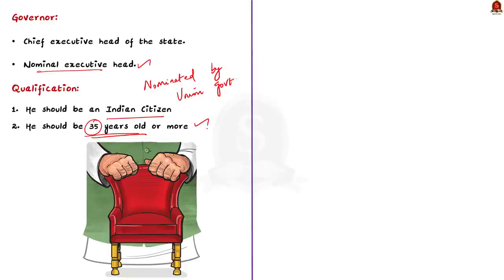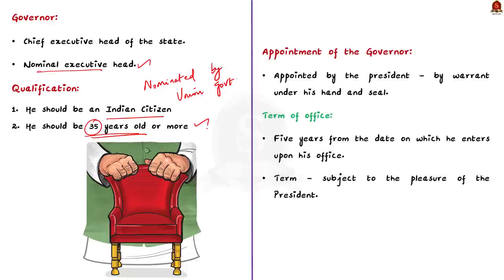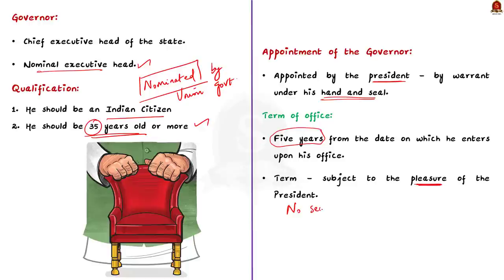There is no direct or indirect election for the post of governor. The Indian president appoints the governor for each state by warrant under his hand and seal, and the central government is responsible to nominate the governor. The governor holds office for a term of five years, but this term is subject to the pleasure of the president — meaning the governor has no security of tenure. The governor may be removed by the president at any time. This is called the doctrine of pleasure.